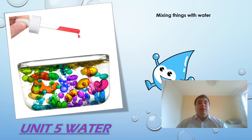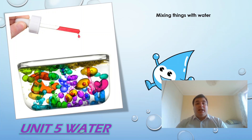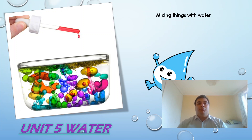But before starting with that, let's review what we learned from the previous lesson. In the previous lesson we learned that water can be found in three different states: as liquid, gas, and solid. We have water as liquid, gas as steam, and ice for solid. We also learned that water can change to these states when it reaches different temperatures, and that molecules are closer or more separated according to the state they are in.